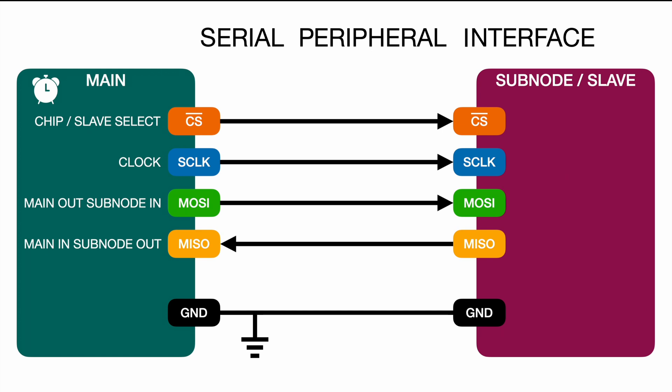That's basically all you need to know about SPI and how to wire it — it's fairly simple. The arrows are just there to indicate the direction of data flow, but basically you're going to wire a cable from point A to point B. A cable has no direction.